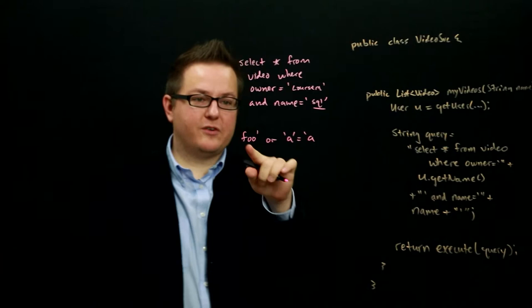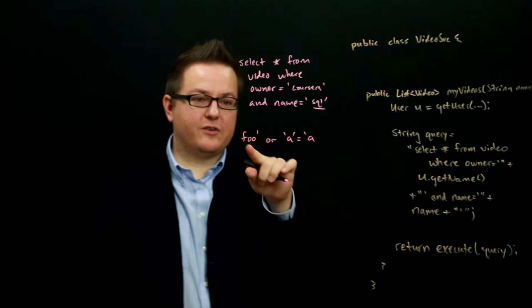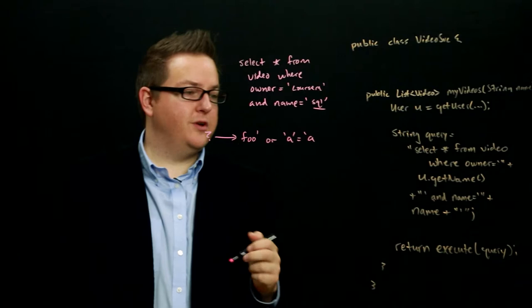Now, this looks like a strange string. So what happens if the client provides that? Well, if you go and substitute this in here and let's assume the owner is Foo.